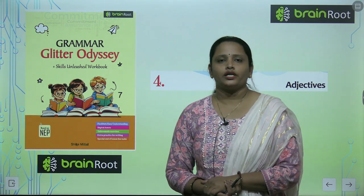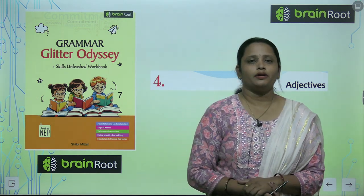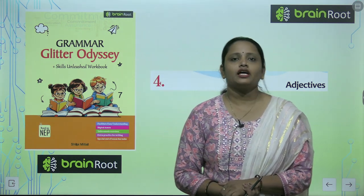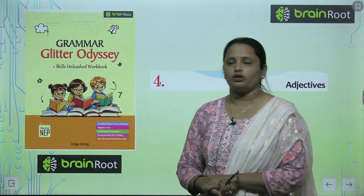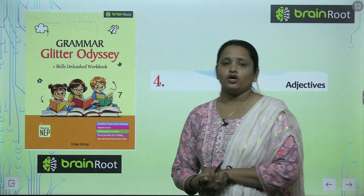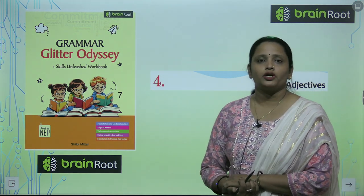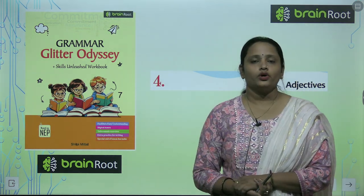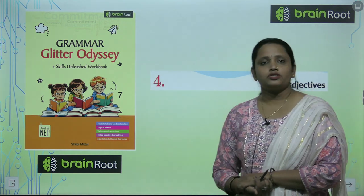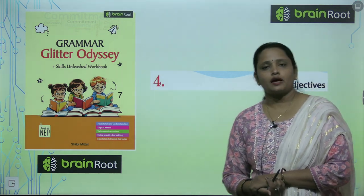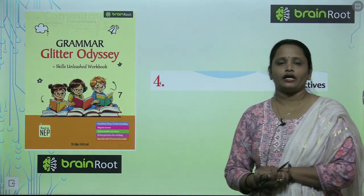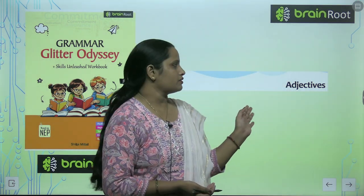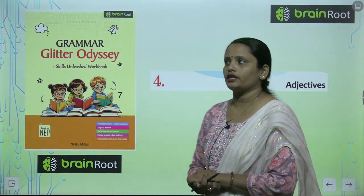Hello my dear children, welcome back to the Brain Root series by Amit Publishing House Children. I am Vandana and we are doing book 7 — this is your grammar book and the name of your book is Grammar Glitter Odyssey. Today we are going to start with chapter number 4, and the name of the chapter is Adjectives. So let's start the chapter.